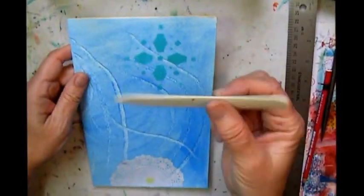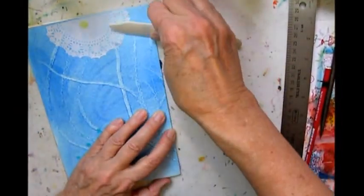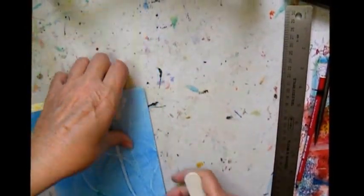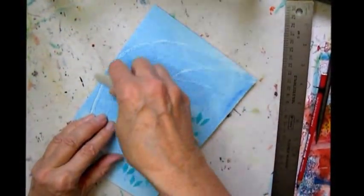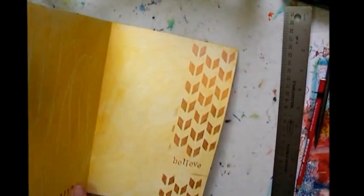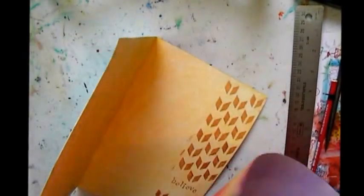And then to flatten it really well I use a bone folder. You can use something with an edge that is unyielding and strong. You want to flatten that out as much as you can.